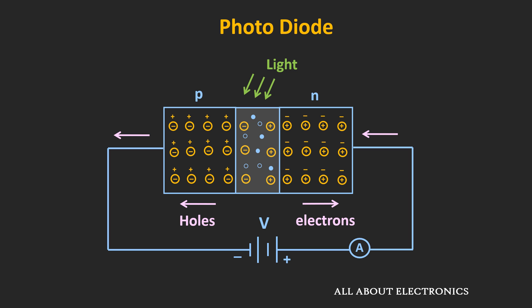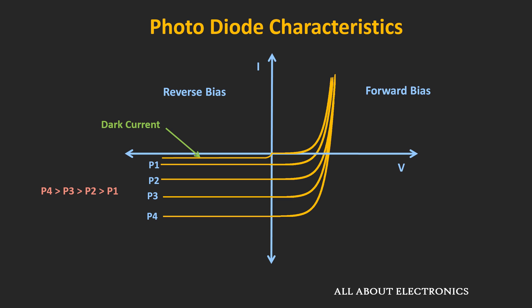If we see the V-A characteristic of the photodiode, here P1, P2, P3, and P4 represent the intensity of the incident light. As you can see, as the intensity of the incident light increases, the photocurrent will also increase.